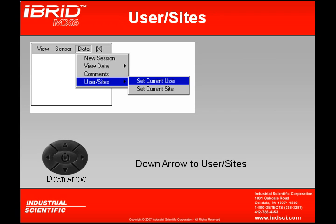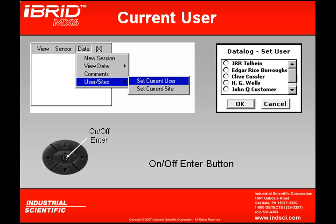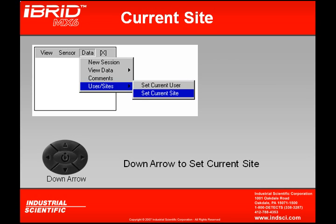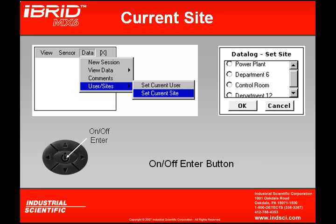My last option underneath Data is User Sites. By pressing my on-off enter button at User Sites, I then have two options: Set Current User and Set Current Site. Looking at Set Current User — because I can data log hundreds of hours of information, that information isn't all that practical unless I can tie all those readings to a particular user. By setting Set Current User, I'm able to select a user in which all those readings for that session will be applied. Similarly, by scrolling down to Set Current Site, I can select a site in which all those readings are going to be applied as well.